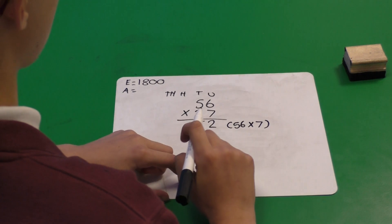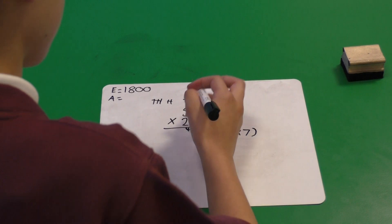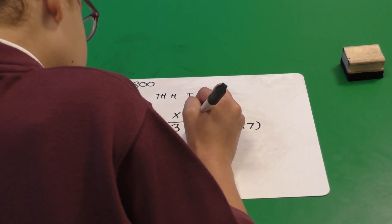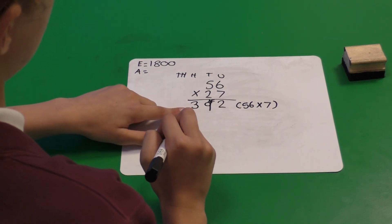We're now going to add it on to our next calculation, which is 50 multiplied by 7, which is 350 plus the 40, 390. So our answer to that first calculation is 392.